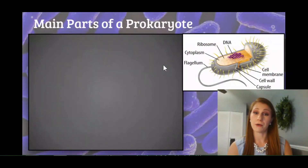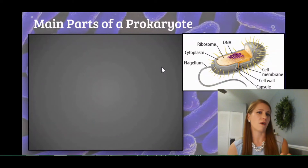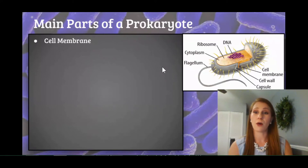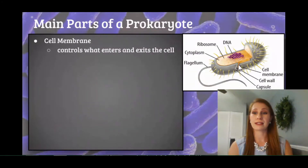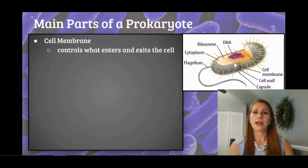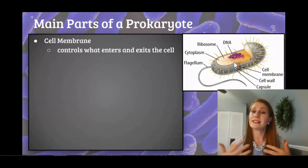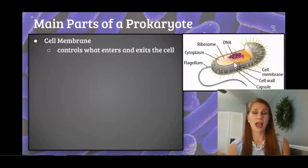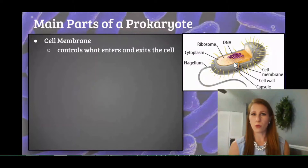Here are the main parts of a prokaryote. I'm going to go over each of them and then briefly compare them to parts of a castle, because I really like fantasy novels and books. Our first one is our cell membrane. We can see here that's the innermost outer covering of the prokaryote, and its job is to control what enters and exits the cell. I think of this as mostly like a drawbridge or a gate — it's going to lower and let certain things into the castle and let certain things out, but it's not always open.